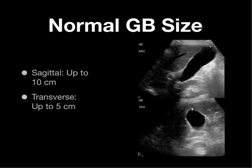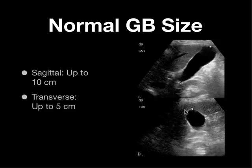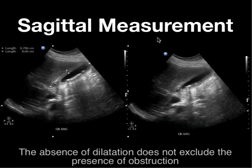Does size matter? Yes. A gallbladder with a transverse diameter, outer wall to outer wall, greater than 4 to 5 centimeters should raise your suspicion of cholecystitis. Sagittally, the gallbladder should be less than 10 centimeters, however this number does not correlate as well as the transverse width measurement. But here's a caveat: the absence of dilatation does not exclude the presence of obstruction, particularly early on in the timeline.